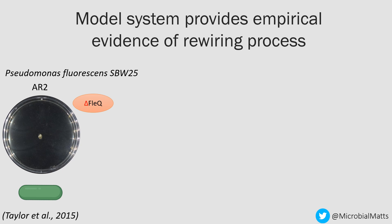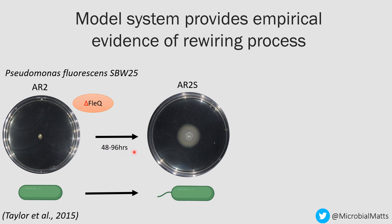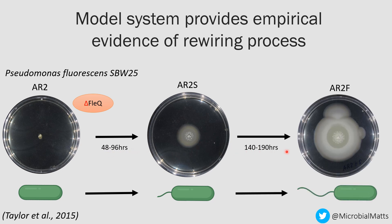In the Taylor Lab at the University of Bath, we have a lovely model system which can begin to provide some experimental data for this process. We work with the common soil bacterium Pseudomonas fluorescens, particularly a delta fleQ knockout strain. FleQ is the master regulator for the flagellum, and without it the strain cannot swim in a soft motility agar plate. However, given long enough — 48 to 96 hours — the strain begins to swim again, and longer still, a faster swimming strain evolves.